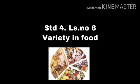Welcome to class 4. Today we are going to learn EVS chapter 6: Variety in Food. What do you mean by variety in food? It means the mixture of food, i.e., vegetables, fruits, cereals, meat, fish and dairy products. It also indicates the range of food that we should consume.